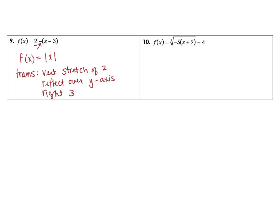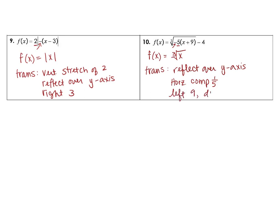The next problem – our parent function looks like it's going to be the cube root of x. Then our transformations – inside we have that negative, so we are going to reflect over the y-axis. We are multiplying by the 5 on the inside, so we have a horizontal compression – because it's on the inside, it's the opposite of what we think – and it's a compression by the reciprocal, which is 1 fifth. And then we are going to go left 9, and then down 4.